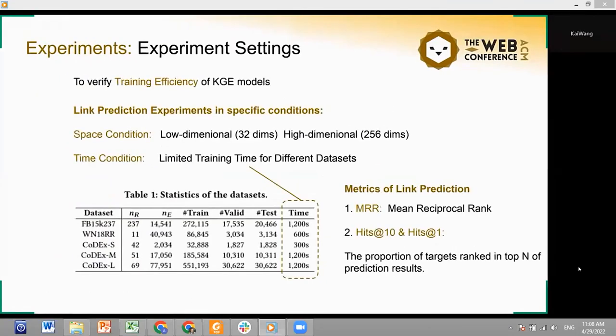To better compare the effect of different training strategies, we conduct link prediction experiments under a limited time and space condition. For the low-dimensional condition, we set a 32-dimensional vector space and 256 dimensions for the high-dimensional space. Meanwhile, each dataset is assigned a fixed training time according to the knowledge graph scale in the dataset, and the metrics of the link prediction task include the MRR and Hits@N. Higher MRR and Hits@N means better model performance.